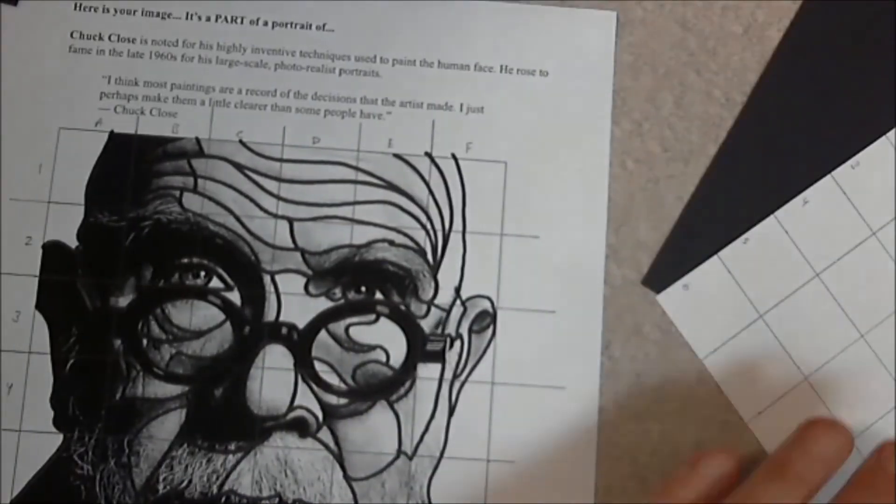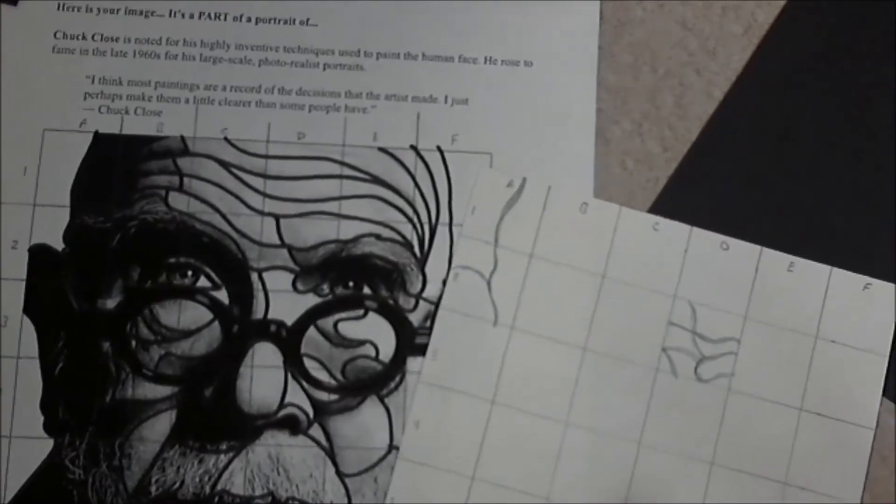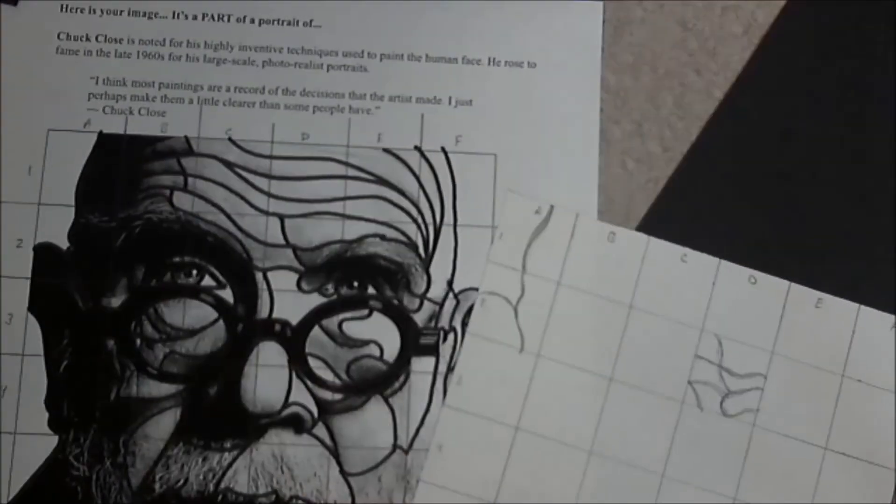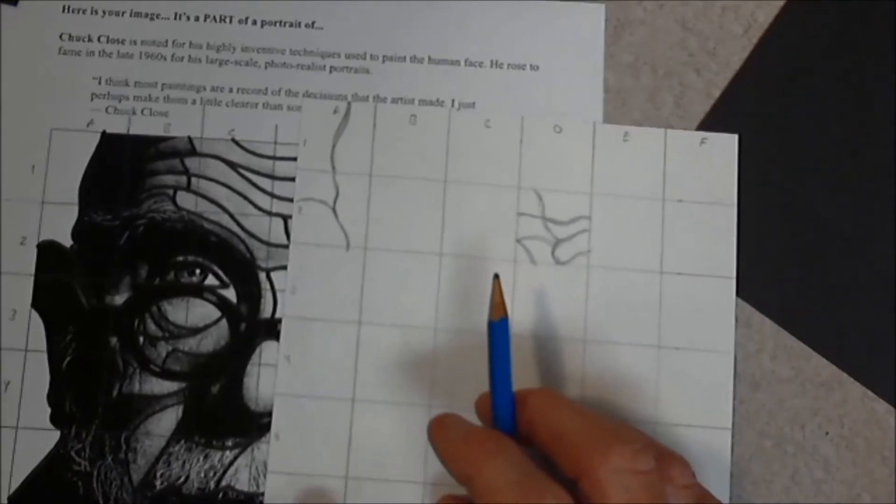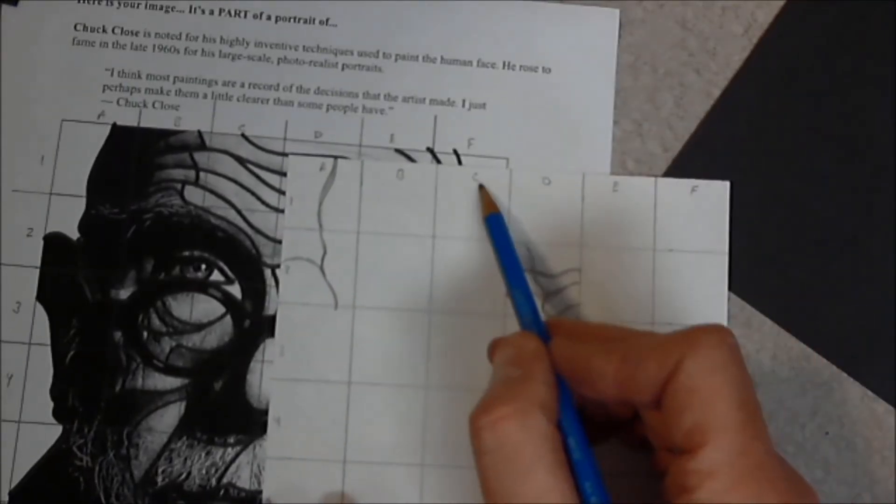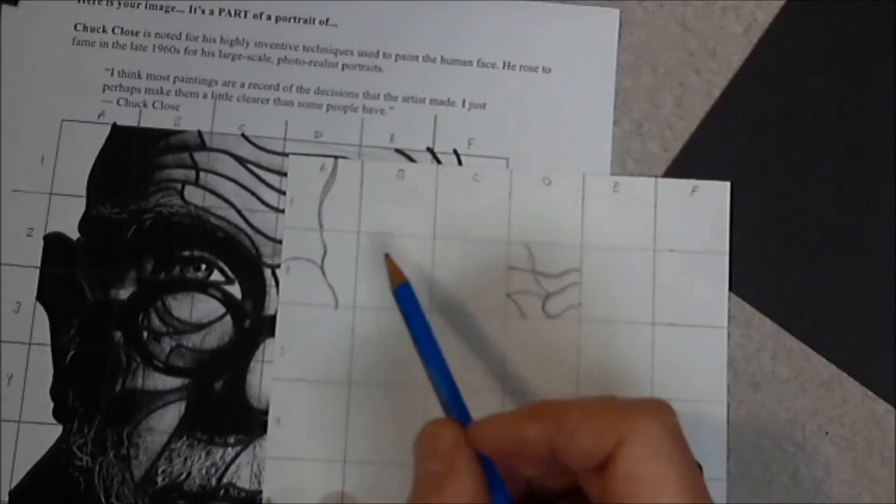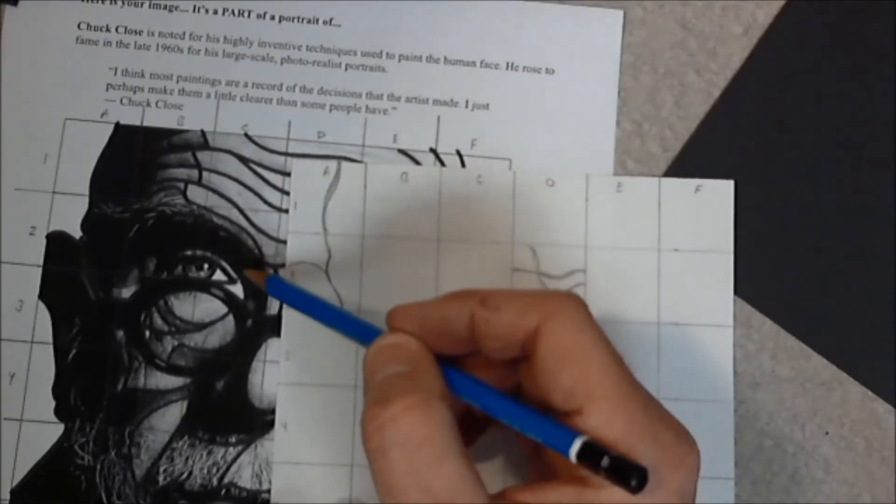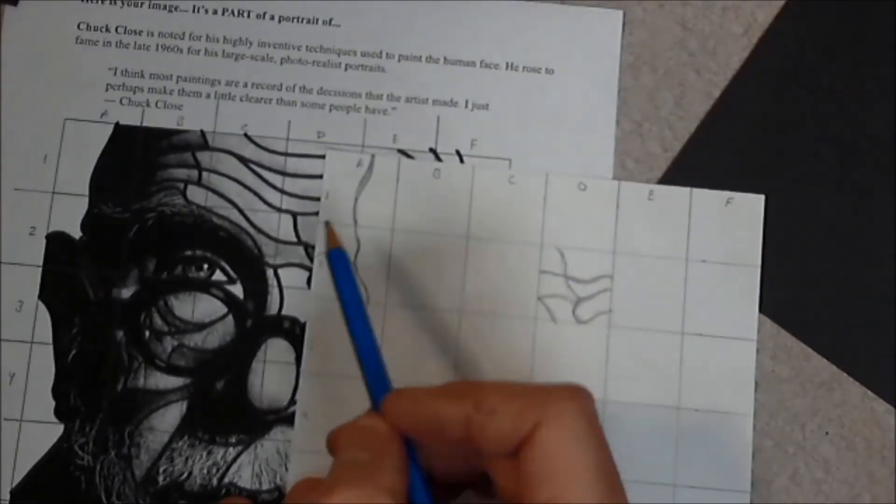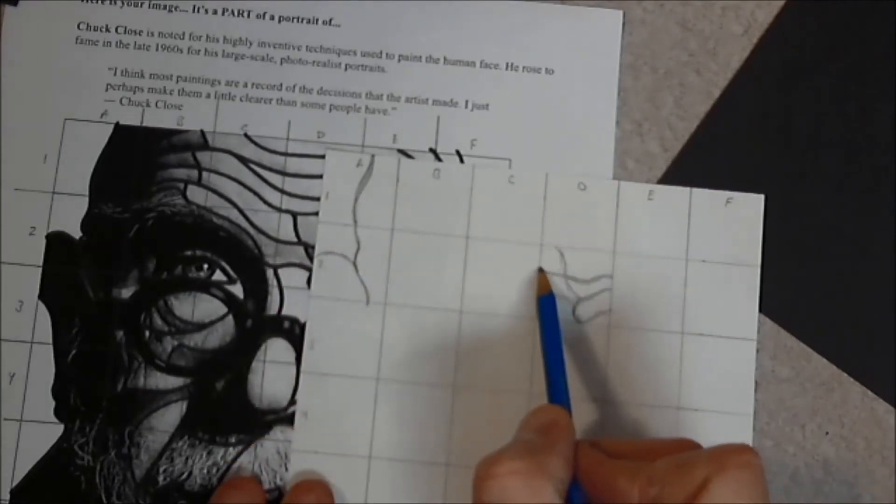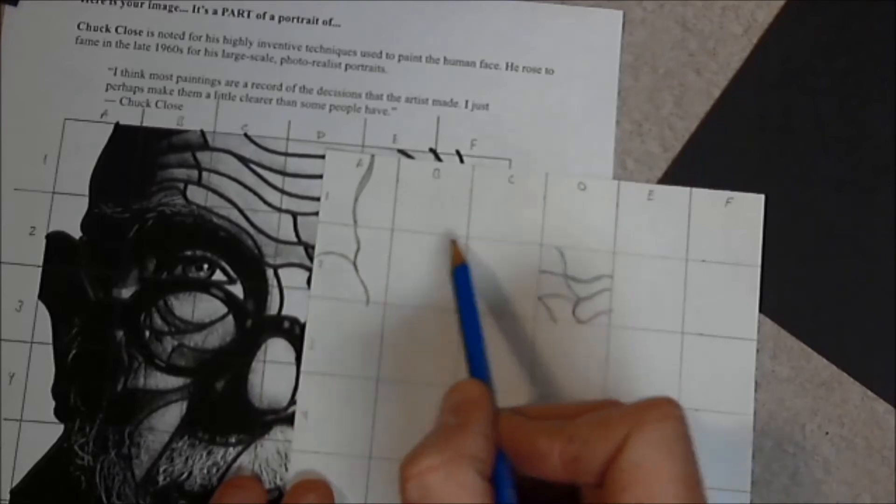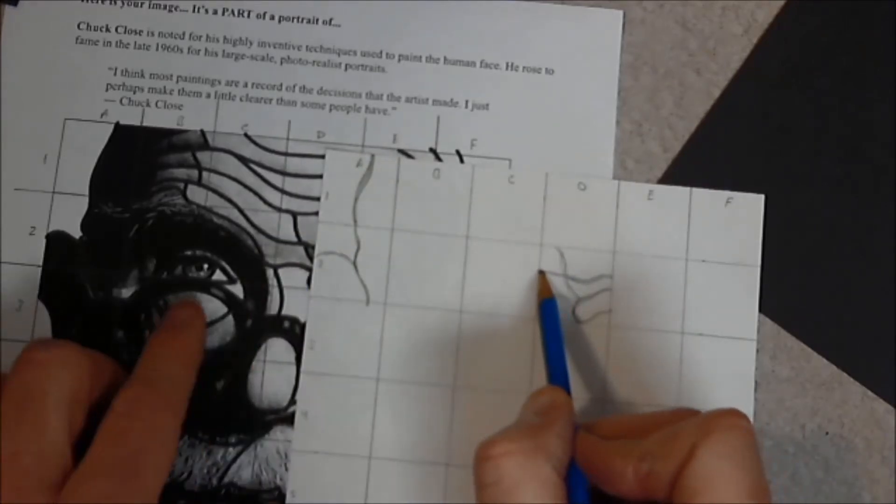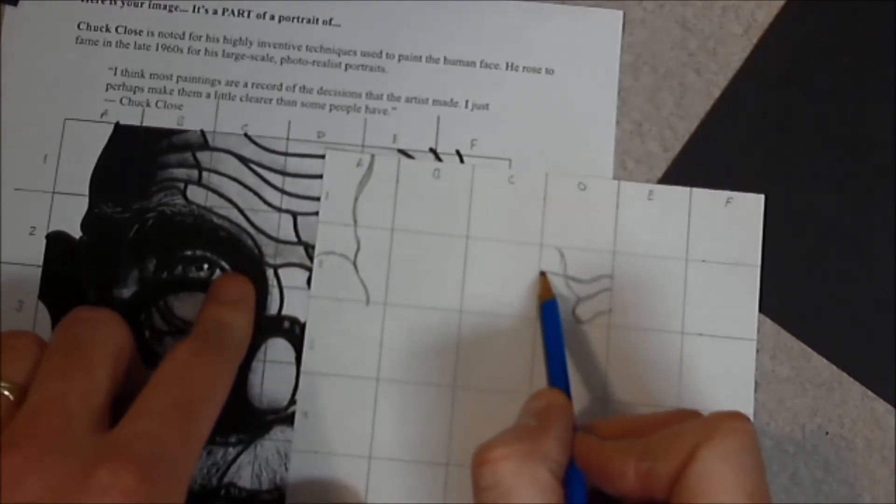So this is how one would go about this process. I don't have time right now to finish and show you a finished drawing. But that's how one goes about this process. I'll do one more square for you without the viewfinder. I'll do C2. So I'm in C2. And this is important because now I can see where this line exits and joins up with what's in C2.